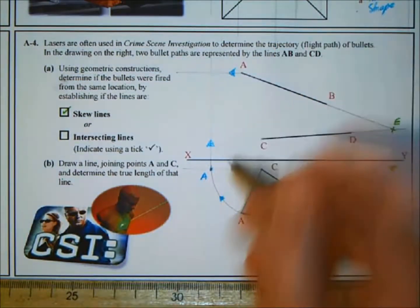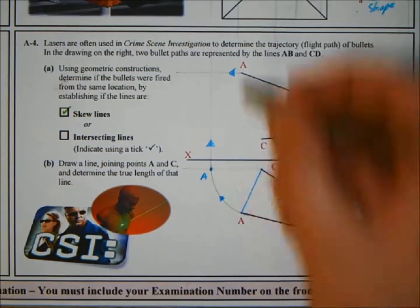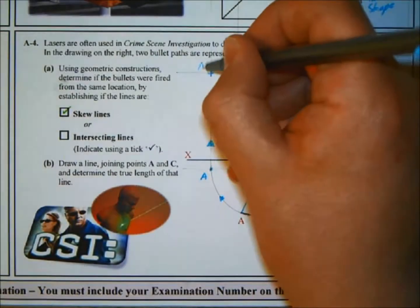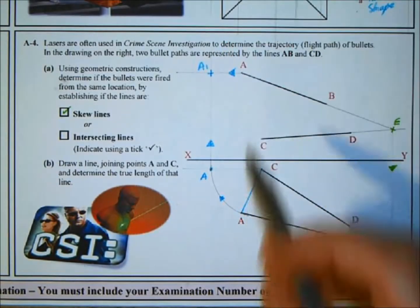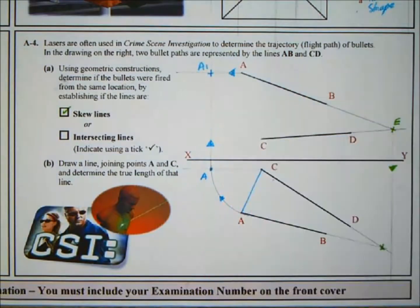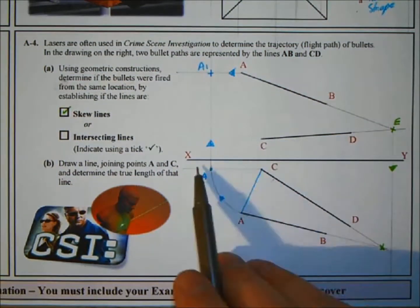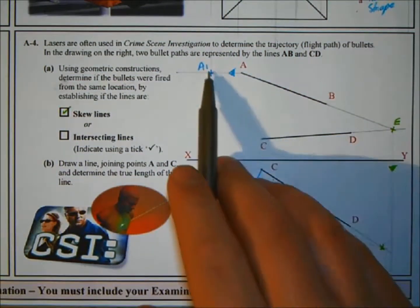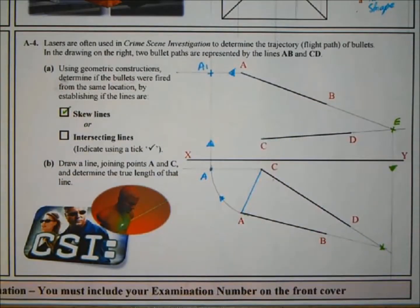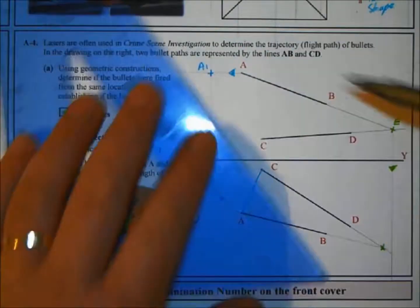So we're finding a new position for A. So this is where A is now. We can call it A1 if you want. So that's point A1. And then the line is parallel to XY line here in plan. If I join A1 back to C, I will find true length of that line. Join C in the elevation.